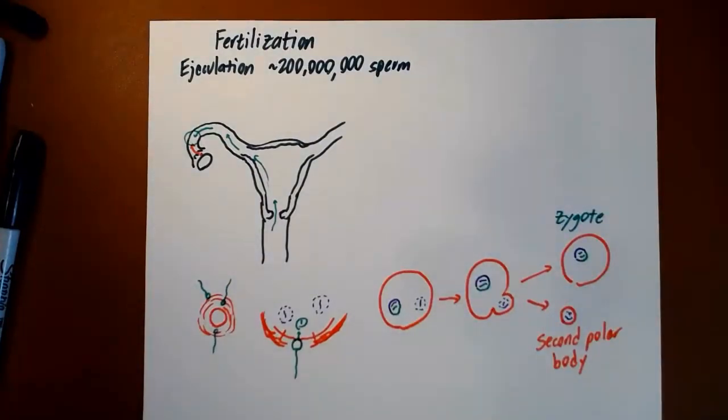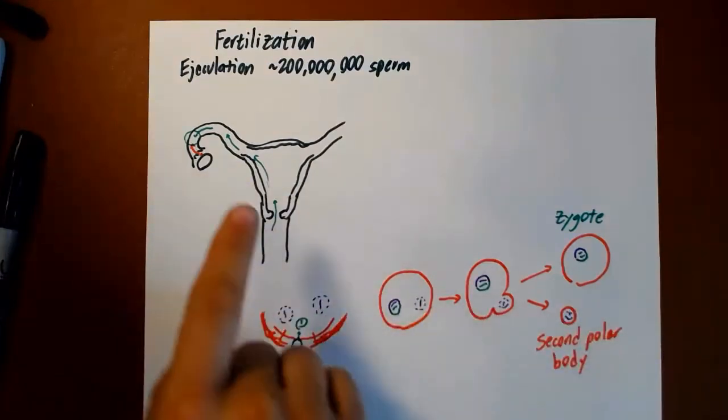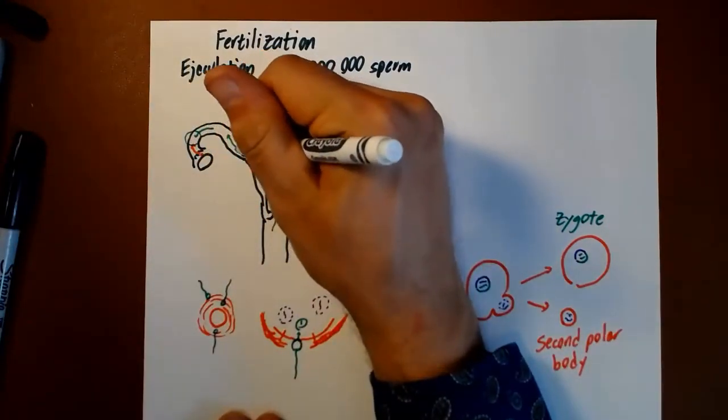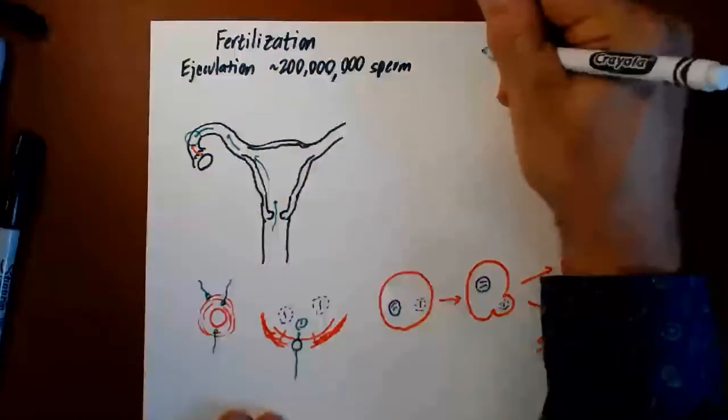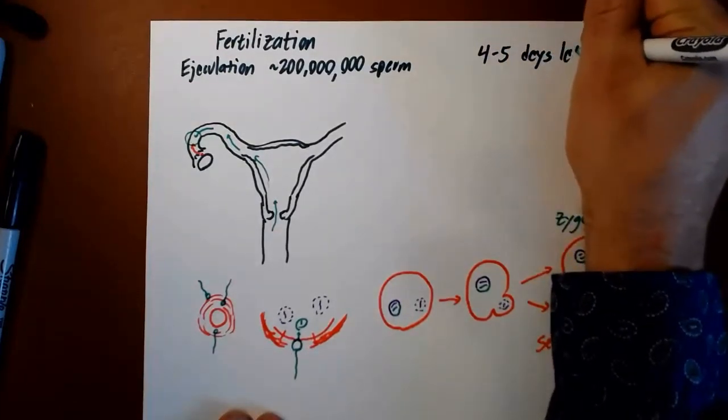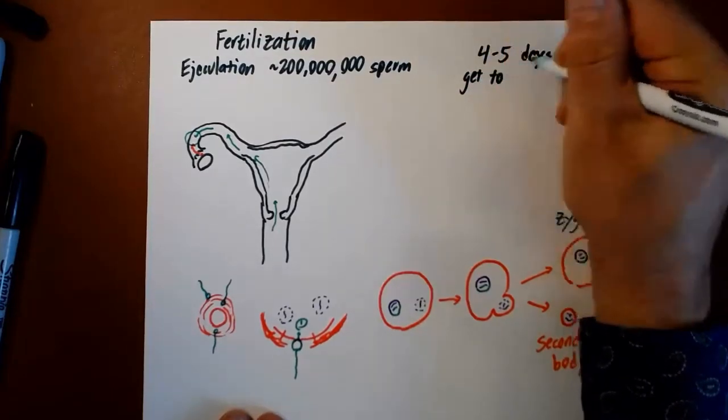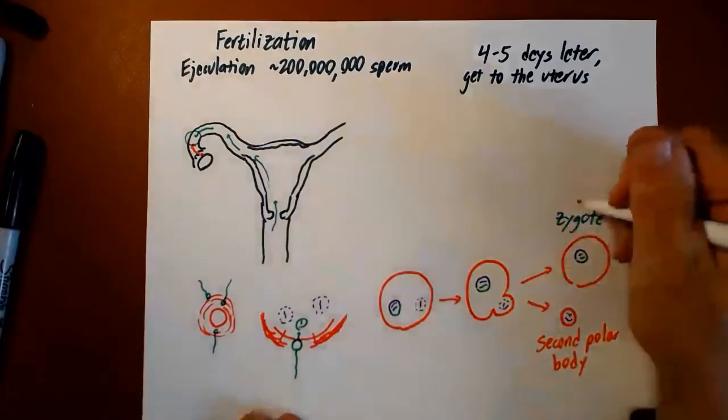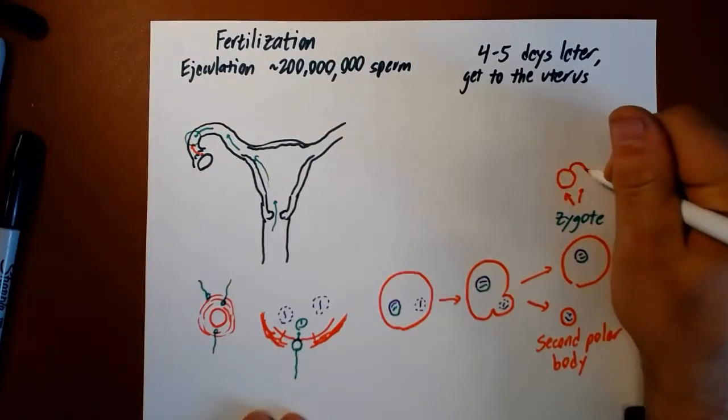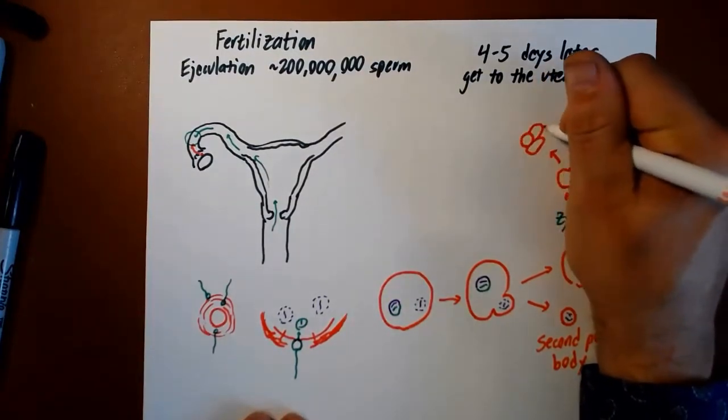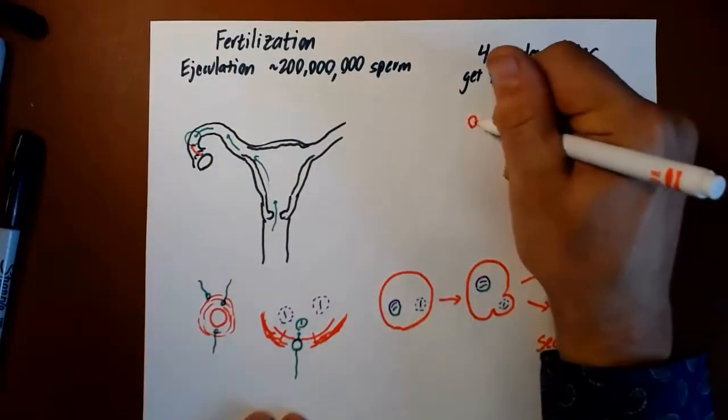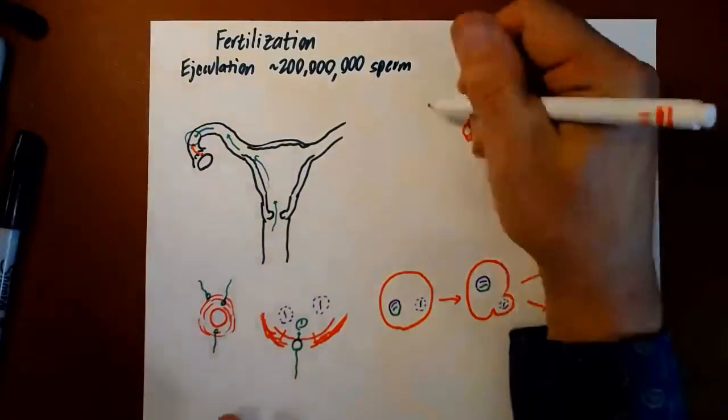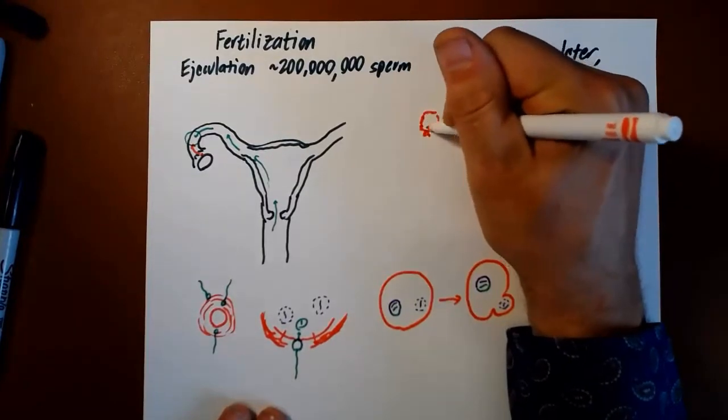This is that cell which has the potential to develop into a fully fledged human being. That process of fertilization usually happens here in the fallopian tube. It's then going to take four or five days usually for that fertilized egg to make its way to the uterus. During those four or five days, this zygote is splitting, dividing and dividing. By the time it gets to the uterus, it's typically eight cells.